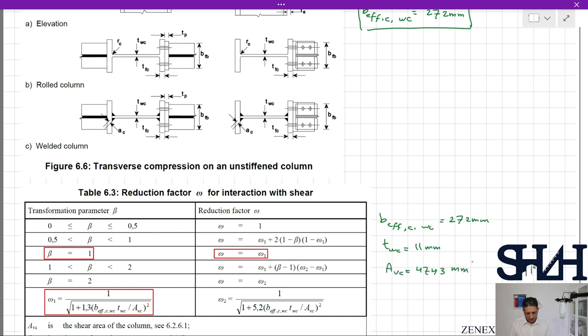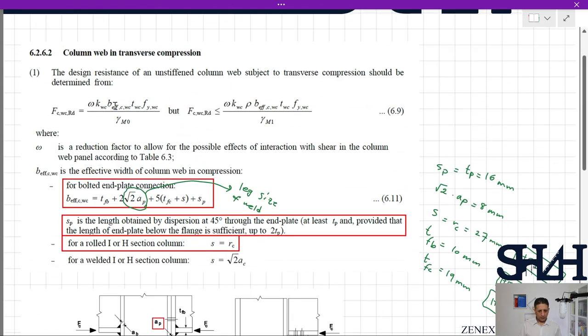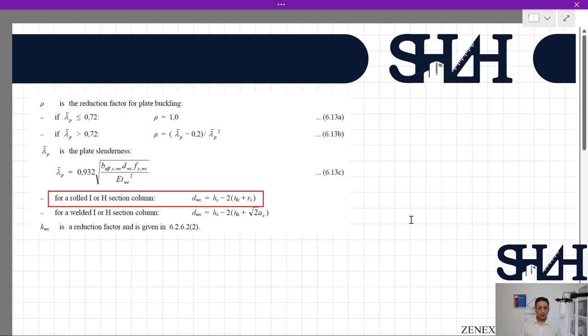ω will be ω1, which is 1 divided by √(1 + 1.3 × 0.81) = 0.81. For the given equation 6.9, we have ω, beff, tw, fy, and γM0. The remaining parameters are kwc and ρ. ρ is a reduction factor due to buckling. These equations show the procedure we need to calculate. First, we need to determine λ̄p, the plate slenderness, according to the given equation.